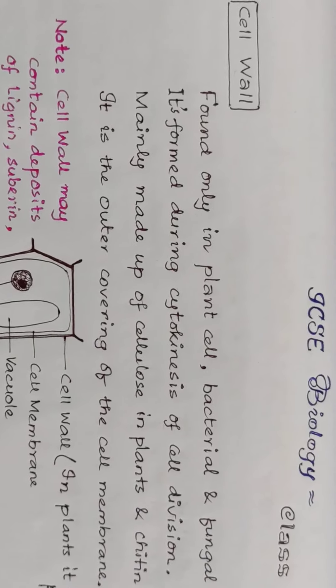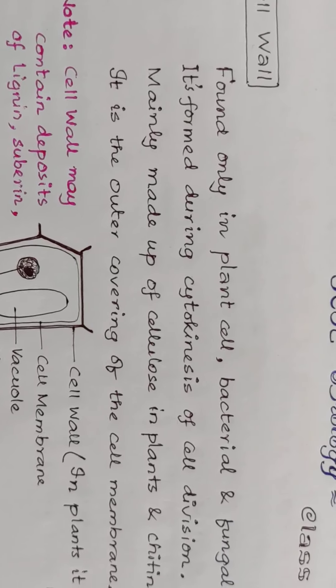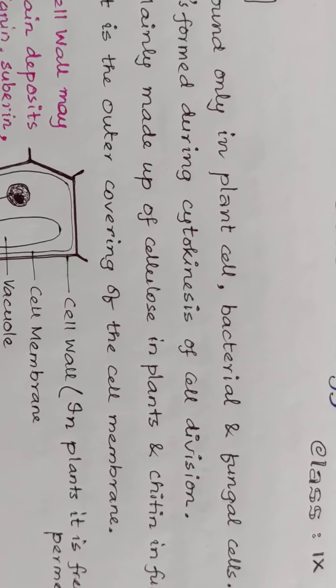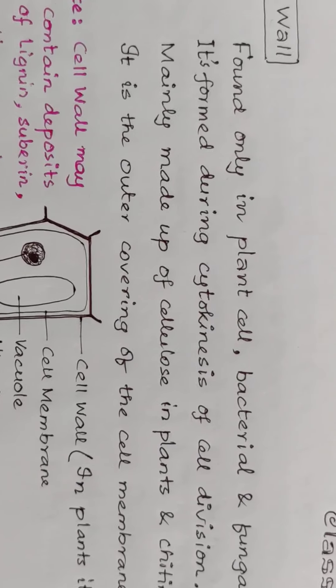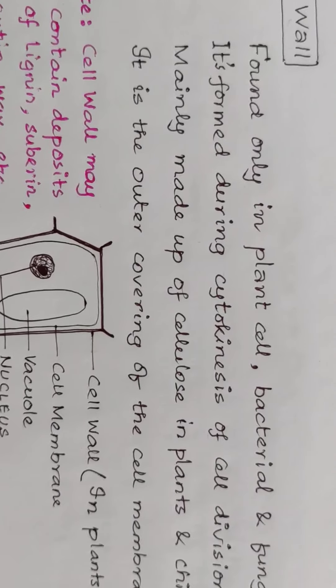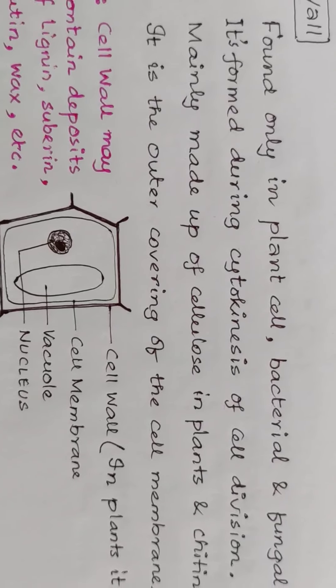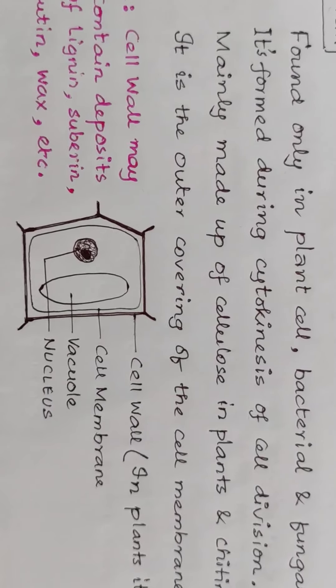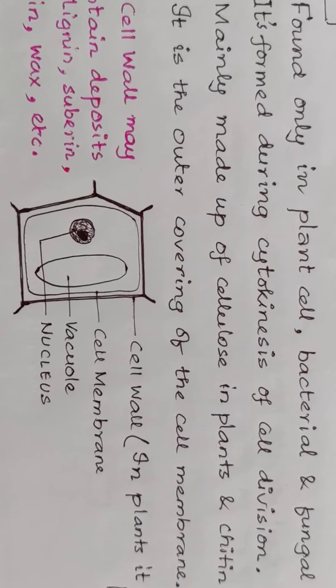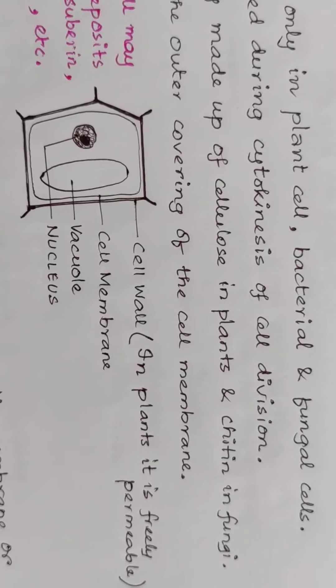Cell wall is found only in plant cells, bacterial and fungal cells. It is formed during cytokinesis of cell division. They are mainly made up of cellulose in plants and chitin in fungi.